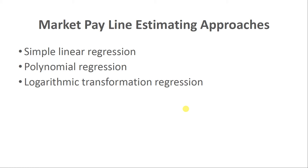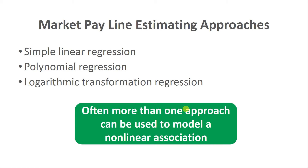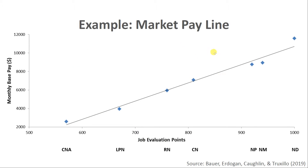To summarize: if you want to model a straight line, use simple linear regression. If you want to model curvature or non-linear associations, use polynomial regression or logarithmic transformation regression. Often, more than one approach can effectively capture the same non-linear association — for example, a quadratic polynomial model and an exponential logarithmic transformation model may both work. The choice depends on what you're trying to model and what you're most comfortable interpreting. The speaker tends to prefer polynomial regression models.